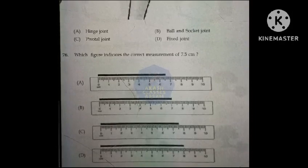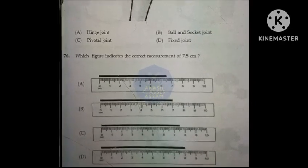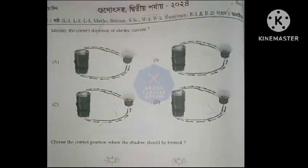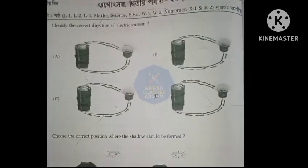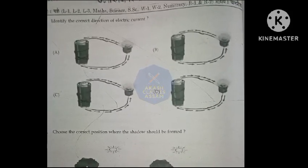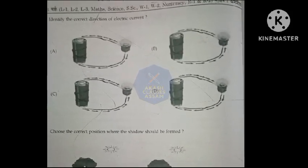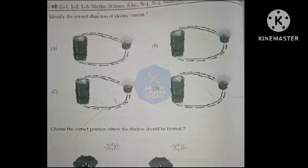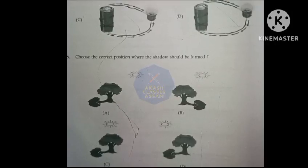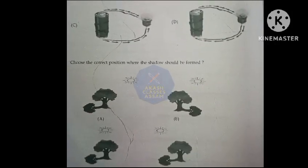Which figure indicates the correct measurement of 7.5 centimeter? Option C. Identify the correct direction of electric current: Option D. Choose the correct position where the shadow should be formed: Option A.